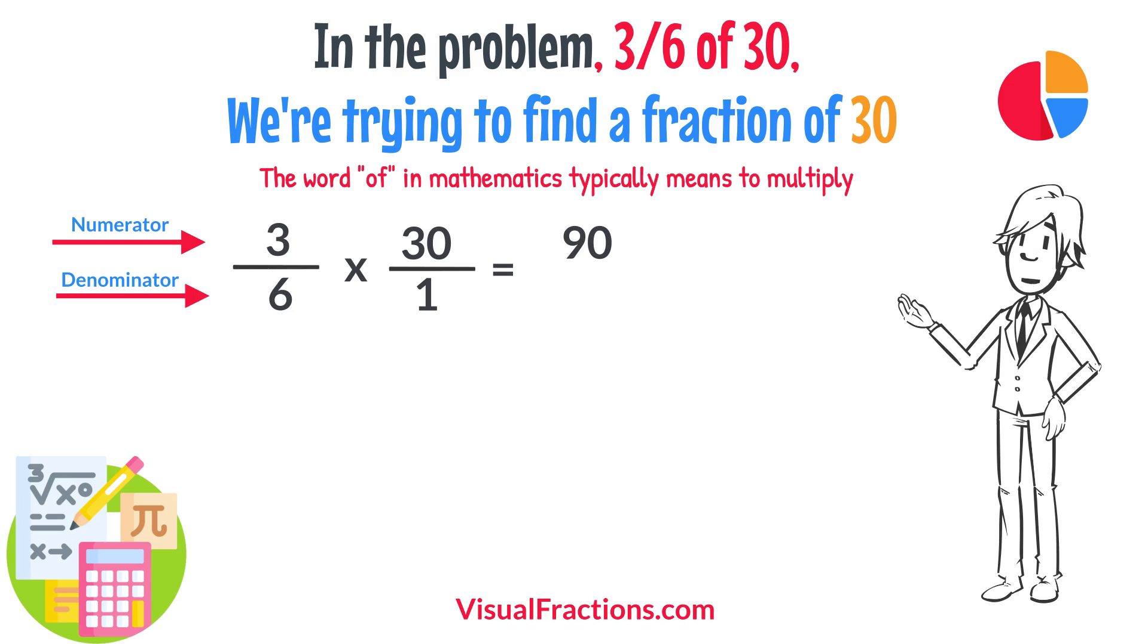Next, multiply the denominators, 1 times 6 equals 6. We now have a new fraction, 90 sixths.